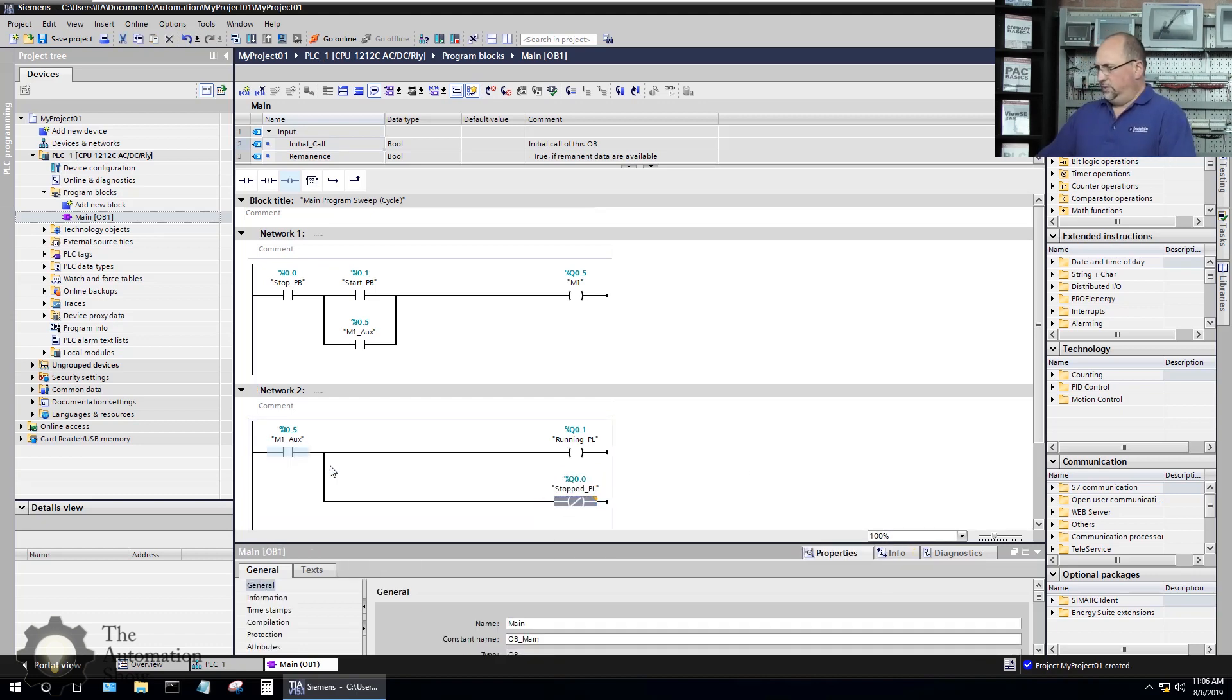And I'm also going to branch around that with turning off the stopped pilot light. Okay. So if this is on, I'll get running. If this is off, I'll get stopped. All right. So far, so good. Let's go ahead and save our project.